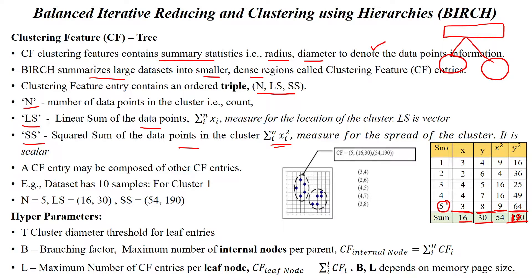When applying the BIRCH algorithm, we consider t — the number of entries allowed to each cluster — which determines the diameter size of the cluster. The branching factor defines the number of internal nodes per parent. For example, if the branching factor is 2, the parent is allowed to have only two children.